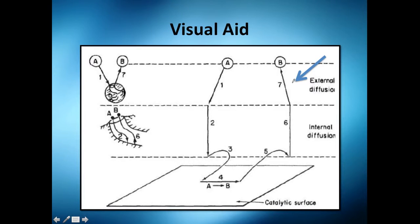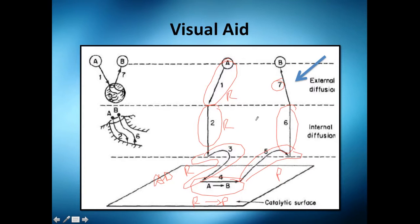And finally, last but not least, is step number seven. So we've seen all these: internal diffusion of reactant, external diffusion of reactant. One here is the absorption of reactant, the reaction of reactant into products, the desorption of the product, the internal diffusion of the product.